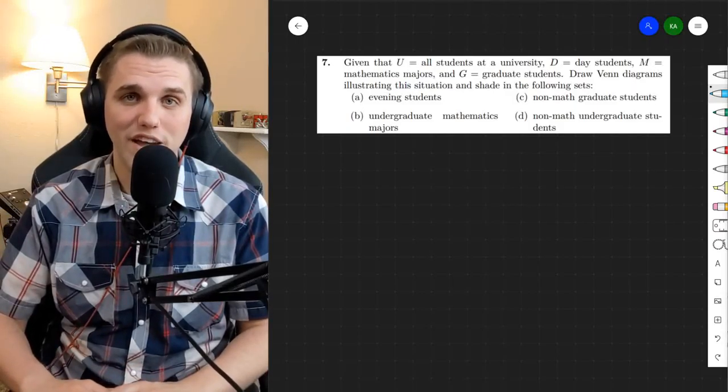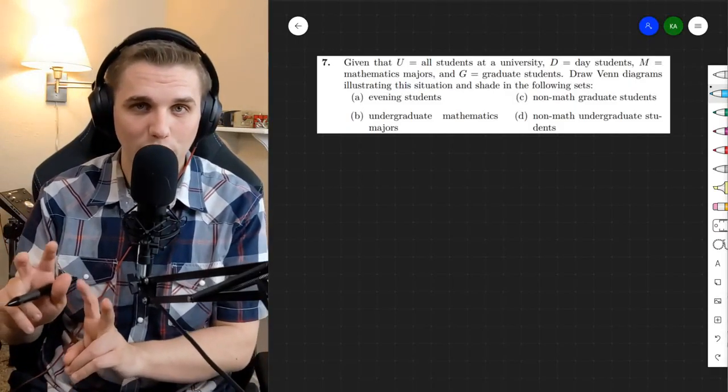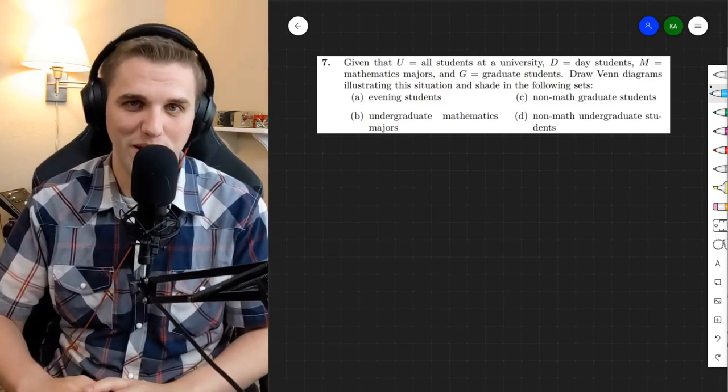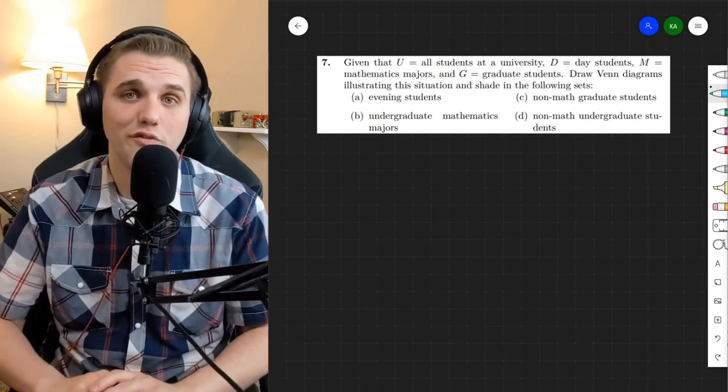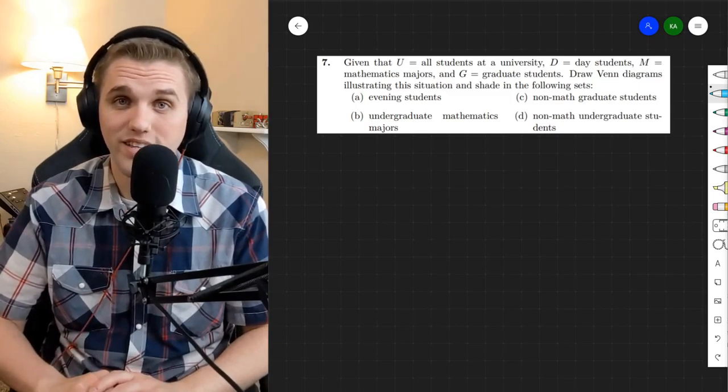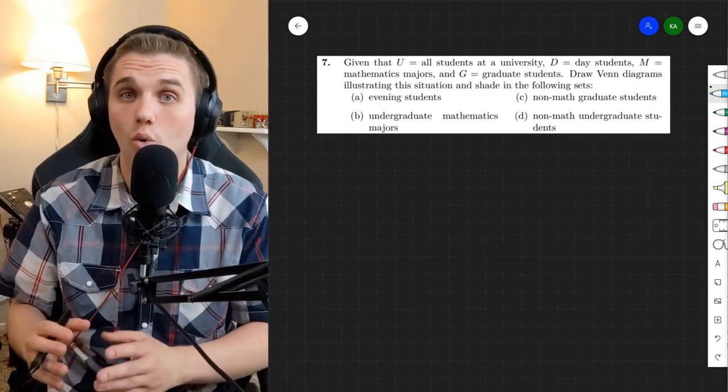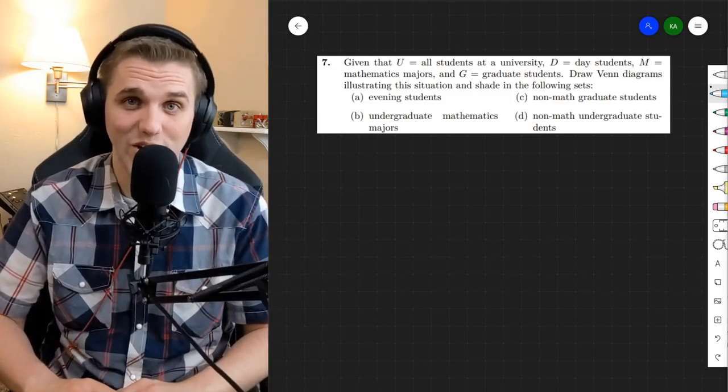Hey everyone, we're going to be applying Venn diagrams to a real-life application of discrete math. Now, this is problem 7, which can be found in your free online discrete math textbook, and I'll leave a link in the description. We're in section 1.2 right now. All right, let's get started.